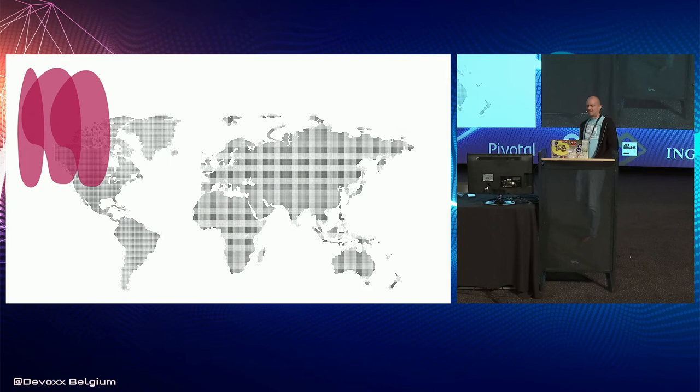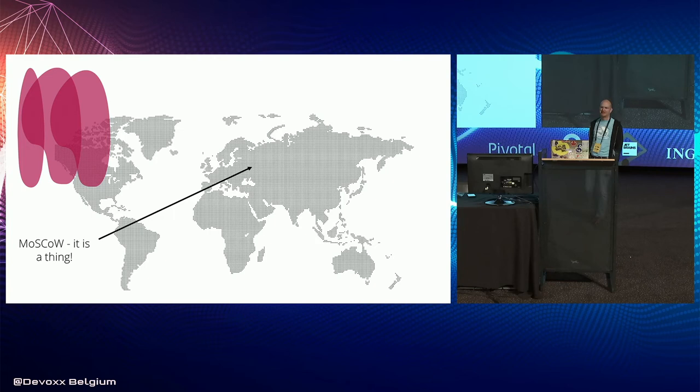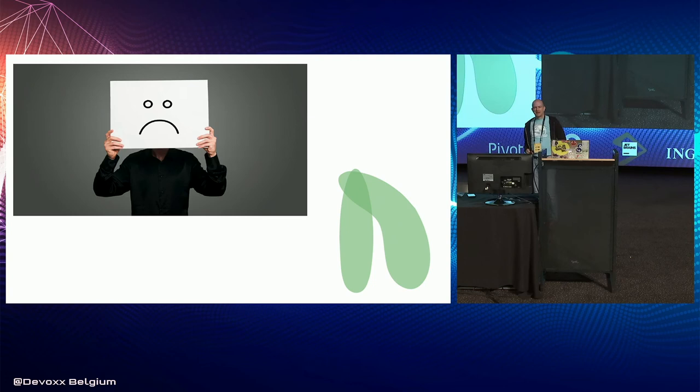M is marketing-driven development — when your business starts a marketing campaign without warning, says 'by the way, in three months this campaign is happening,' and you have to have the functionality ready to support it whether it's feasible or not. Also M: Moscow-driven development — must, should, could, would — a way of prioritizing. It's not a bad thing.